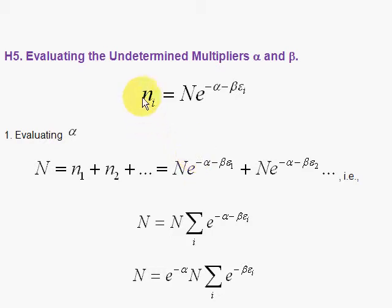Dr. Fiz, Theoretical Physics. Evaluating the Undetermined Multipliers Alpha and Beta from our previous section, where we have the number of particles in the ith state is equal to the total number of particles times e to the minus alpha minus beta epsilon sub i, where epsilon sub i is the energy of the ith level.